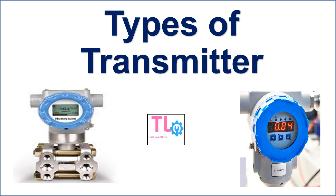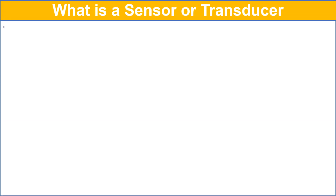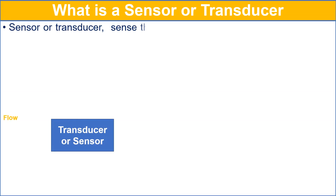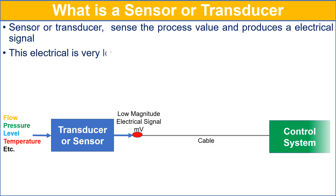In this video, we will talk about the different types of transmitters. The sensor or transducer sends the process value and produces an electrical signal which is proportional to the process value. This electrical signal is very low in magnitude, in the order of millivolts.